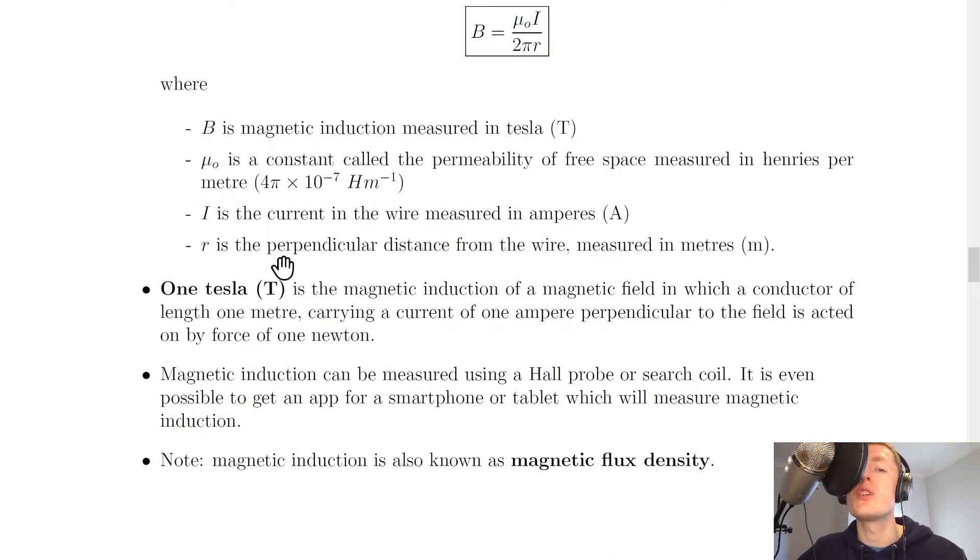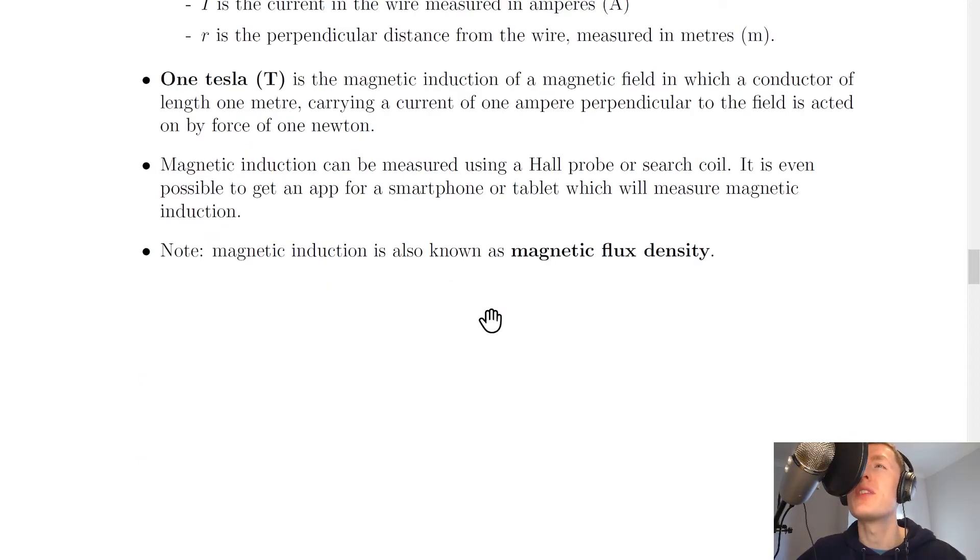Just be careful to use the perpendicular distance for R and not the length of the wire which would be different. We can also define the unit Tesla for magnetic induction: 1 Tesla is the magnetic induction of a magnetic field in which a conductor of length 1 meter carrying a current of 1 ampere perpendicular to the field is acted on by a force of 1 newton.